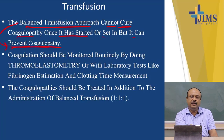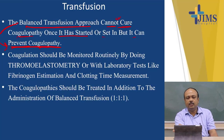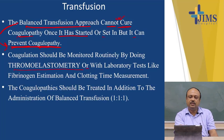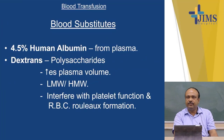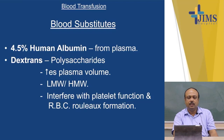Coagulation should be monitored routinely by thromboelastometry or with laboratory tests like fibrinogen estimation and clotting time measurement. The coagulopathies should be treated in addition to administration of balanced transfusion by giving various blood products or coagulation-enhancing products which improve the coagulation system.